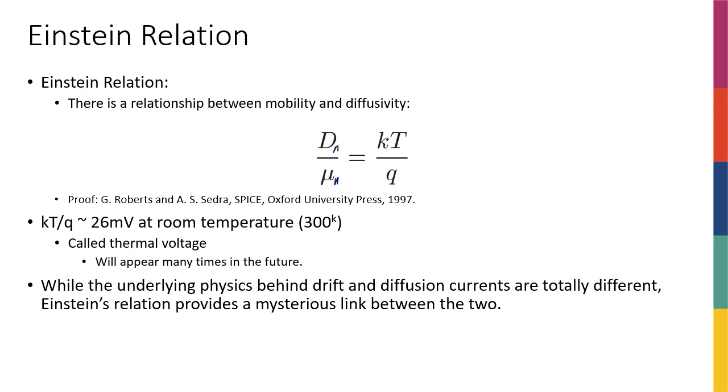We know its value, 1.38 times 10 to the negative 23. T is the room temperature, or the temperature that we have in the room, and q being the charge of an electron. So basically, this ratio, D over mu, is going to be always equal to a constant value for a certain temperature. So at room temperature, for example, which is 300 Kelvin, we're going to have kT over q that is approximately equal to 26 millivolts. It's also interesting that the dimension of this ratio is actually in volts. So this is approximately 26 millivolts at room temperature.